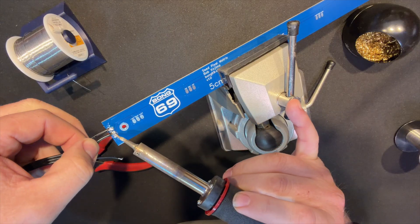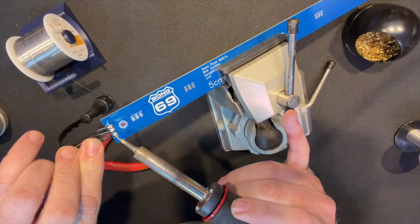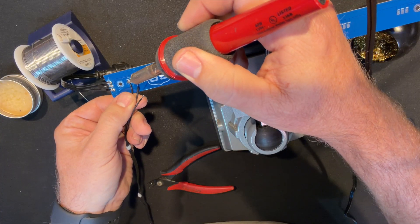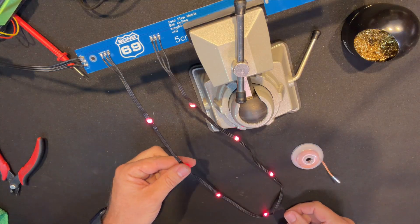Soldering seed pixels onto this layout is actually really easy. Everything is spaced out and clearly labeled. You don't need crazy fancy tools, just take your time and make sure each joint is solid.